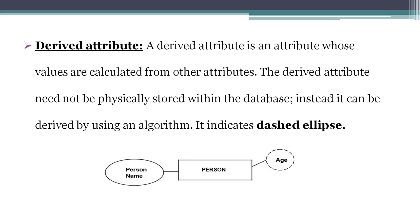Next one: Derived Attribute. A derived attribute is an attribute whose values are calculated from other attributes.